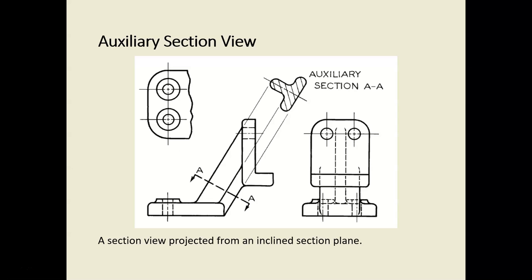One final example — getting slightly beyond our chapter — we can also create auxiliary section views. Here we have a cutting plane line traveling at an angle, perpendicular to the feature. When we project through, we get an auxiliary section view. Section views will be covered in the next module.